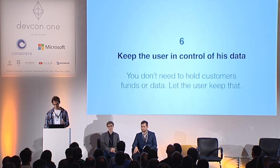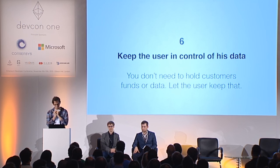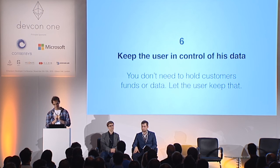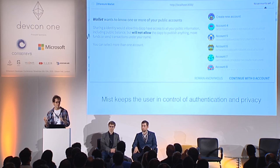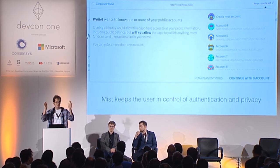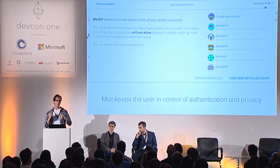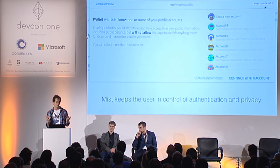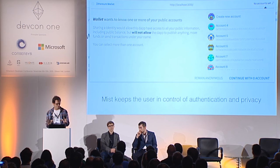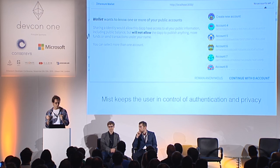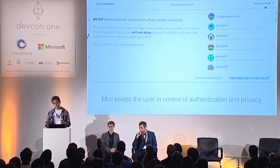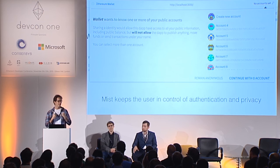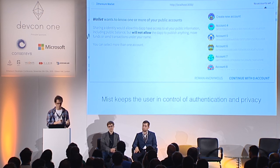The last point is keep the user in control of his data — something the current web doesn't do but the decentralized web can. In Mist, the user starts all apps anonymously and can choose one account to reveal himself. You may not need a login or password in your app at all — all you need is to ask the browser to show proof of ownership of a public key. Your app becomes simpler and the user keeps his private data in his own browser.